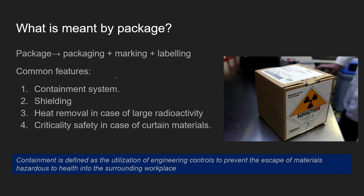A package for radioactive materials means the packaging along with marking and labeling. Common features include a containment system — defined as the use of engineering controls to prevent hazardous material from escaping into the surrounding workplace — shielding to attenuate gamma photons coming out of the radioactive materials, heat removal in the case of large activity, and criticality safety for certain materials.